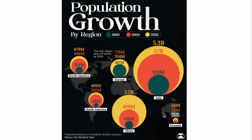Oceania in 1900 had 6 million people, in 2000 had 31 million, and is projected to have 58 million by 2050. Adding it all up: in 1900 there were about 1.628 billion people in the world; by 2000 it was about 6.1 billion — a 274% increase. By 2050 the projection is 9.7 billion, a 60% increase from 2000. What do you think?